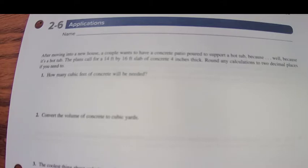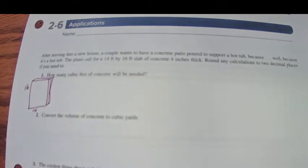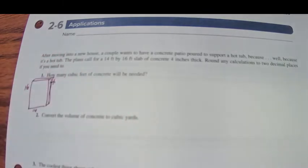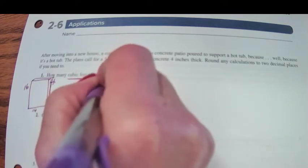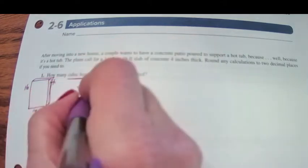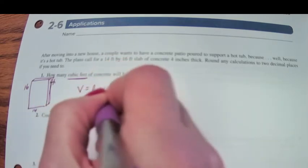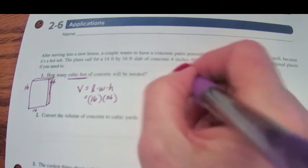Round any calculations to two decimal places. How many cubic feet of concrete will be needed? That's going to be 16 feet by 14, but it's going to be 4 inches thick. We can't put a 4 here because that's 4 inches and that's feet. Since the question is asking for feet, let's change it all to feet. Volume is going to be length times width times height. That's going to be 16 feet times 14 feet.